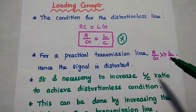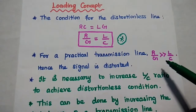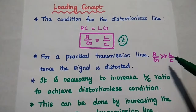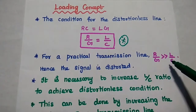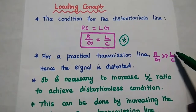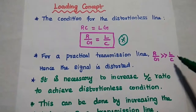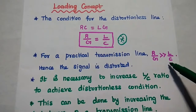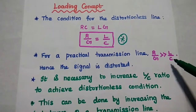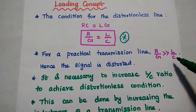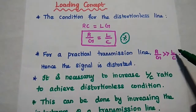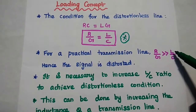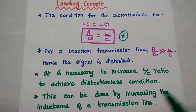In order to achieve the distortionless condition, we have to increase the L by C ratio to make these two ratios equal. This can be done either by increasing the inductance or by decreasing the capacitance. Decreasing the capacitance is a little complicated and cost effective, so we are going to select the method of increasing the inductance to achieve the distortionless condition.